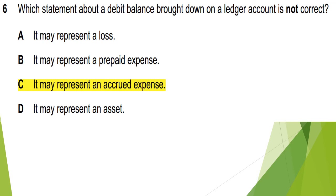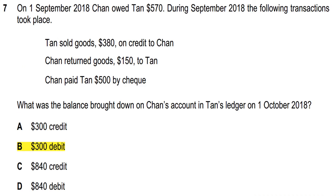Question 6: which statement about a debit balance brought down on a ledger account is not correct? Option A — it may represent a loss — is not correct as a not-correct answer, since a loss always has a debit balance. Option B — prepaid expense — is an asset and has a debit balance. Option C — accrued expenses — are a liability and have a credit balance, not a debit balance. So option C is the correct answer. Option D — an asset — also has a debit balance.